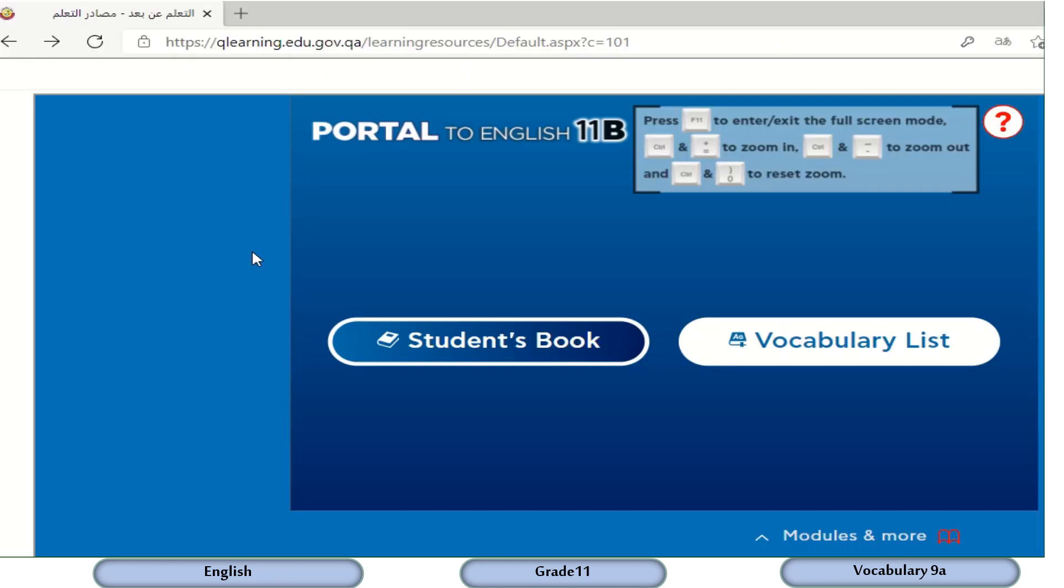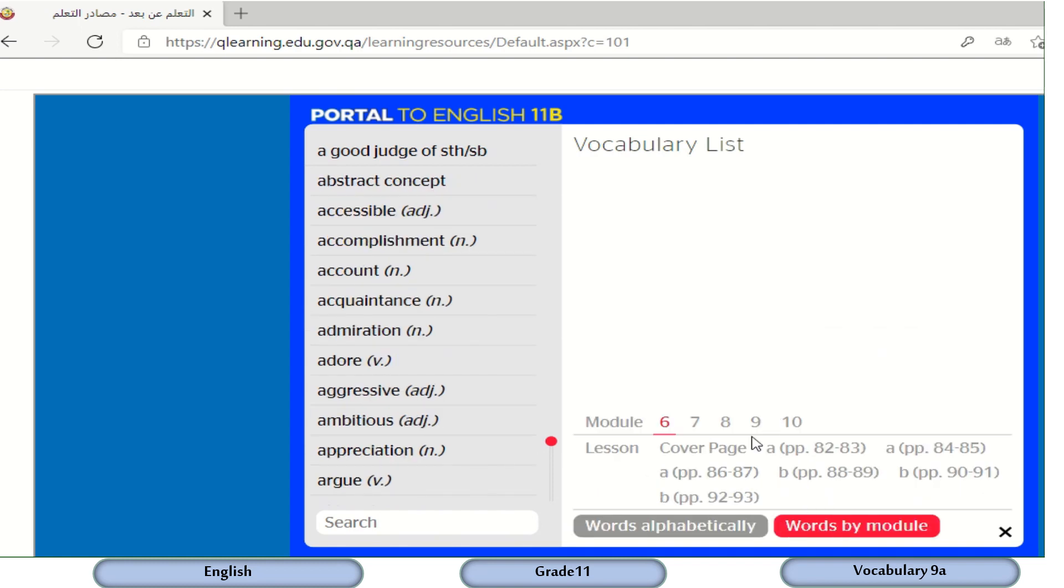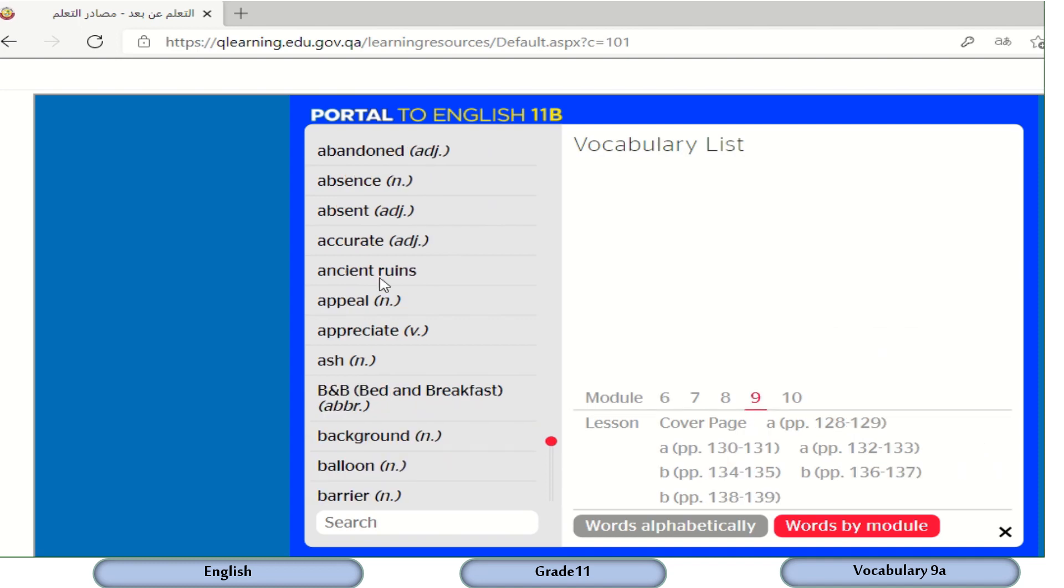If you feel disoriented or confused and you don't know the meanings of the words in activity C, I'd recommend that you go to qlearning.edu.gov.qa and press the vocabulary list. So you can find the words as you can see here by module. So you press on it and you can choose number nine. Our module is number nine and try to find the meaning of the words.